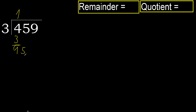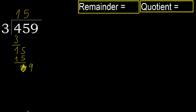Next, bring down 5 to get 15. 3 multiplied by 6 is 18 — 18 is greater. Multiplied by 5 is 15 — 15 is not greater. Subtract: 15 minus 15 is 0. Next, eliminate 0 here.